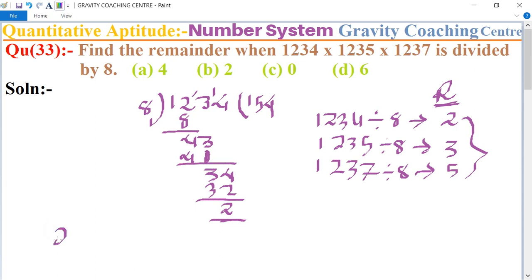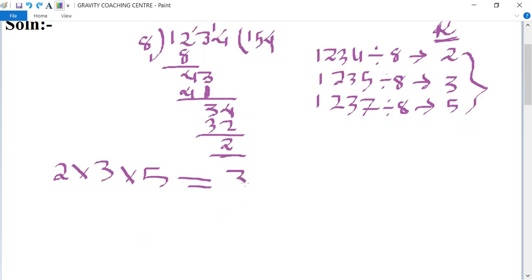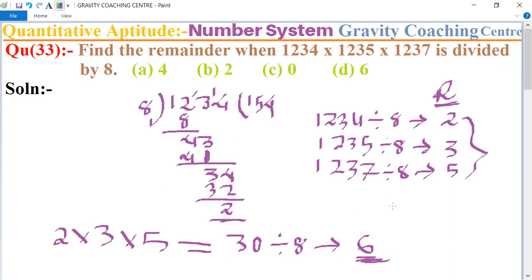2 × 3 × 5 equals 30, so 30 divided by 8, we get remainder as 6. So 6 is the final result, so option 6 is the correct answer.